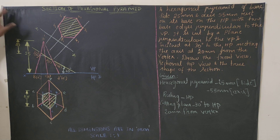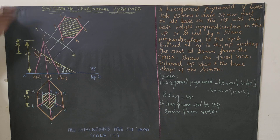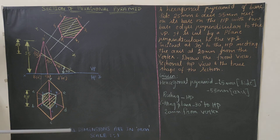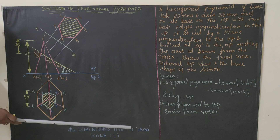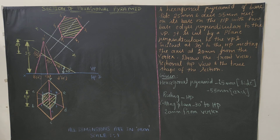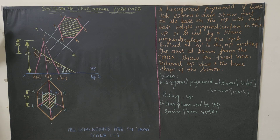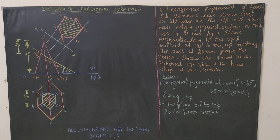Use a pro-circular stencil to write the question number — for fourth unit it will be 4A, since section of solids comes in the first part. Write the title 'Section of Hexagonal Pyramid' in capital letters with text height 10mm. Below it write two lines: 'All dimensions are in mm' and 'Scale 1:1', both with text height 5mm. Draw a border: 20mm from the left, 10mm from the top, right, and bottom, using HP pencil.